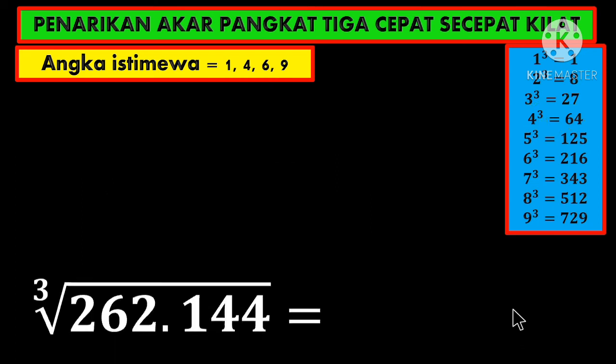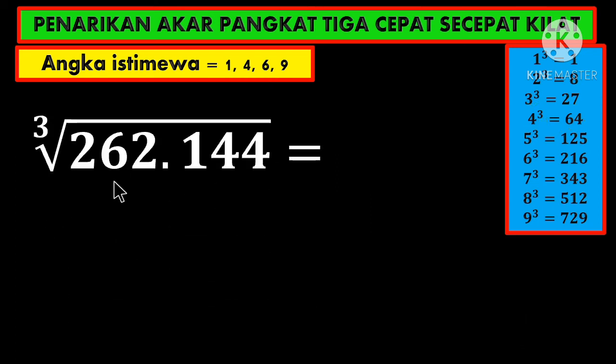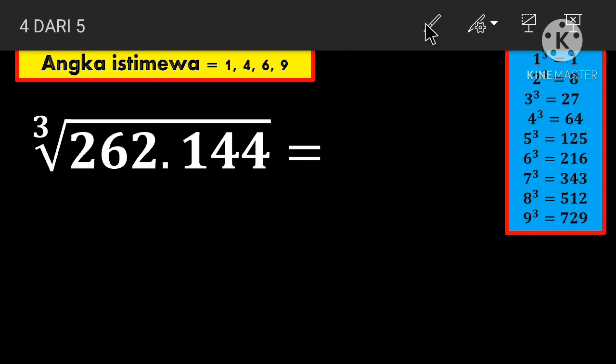Let's see the next example. Cube root of 262,144. Same, we separate at the thousands place. Look at the last digit—number 4. Is 4 in the special numbers? Yes, so definitely the last digit is 4. Then this 262, which is closest? That's this one, so the answer is 64. How about that? Very easy, right?